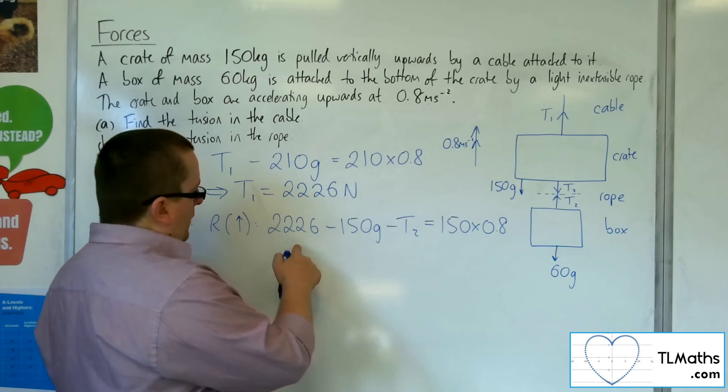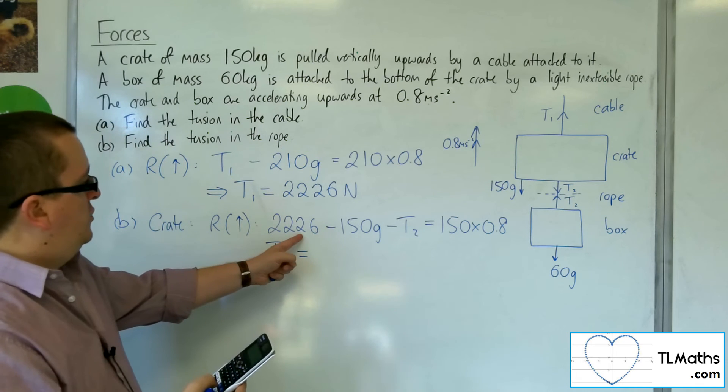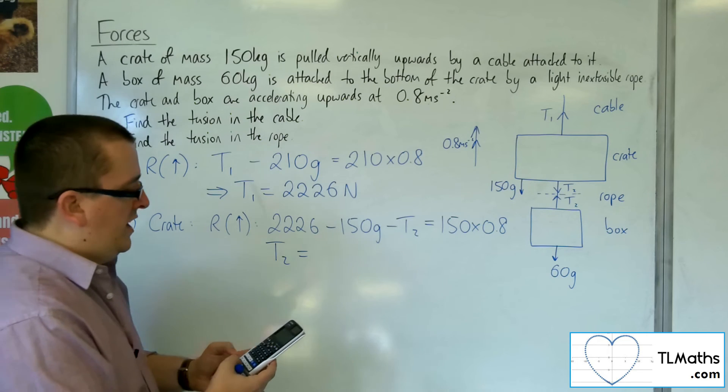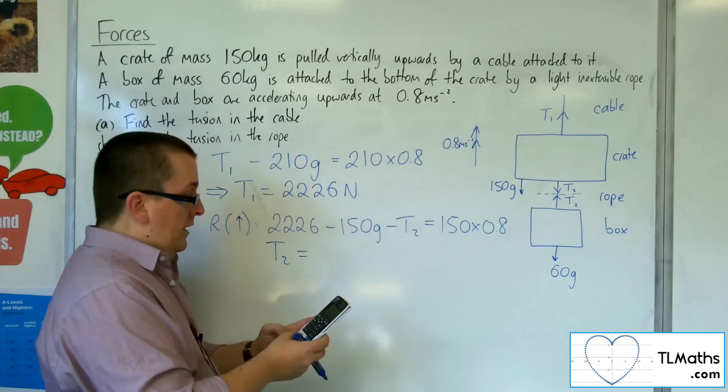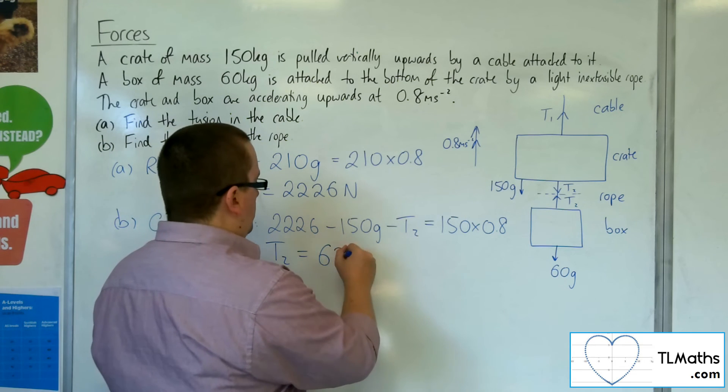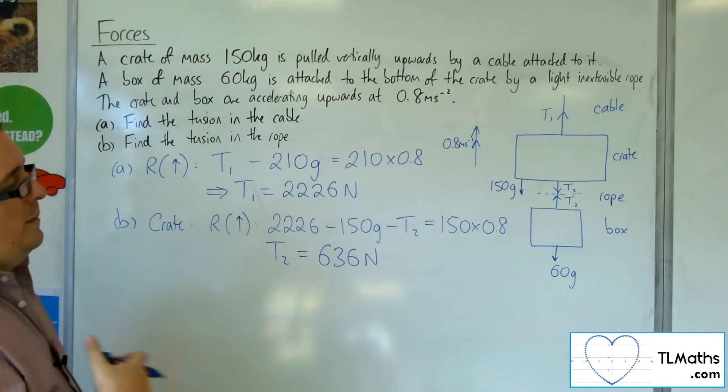So I've got, for T2, I've got the 2226, take away the 150G, which gets me 756, and then take away the 150 times 0.8. And that gets me down to 636 newtons.